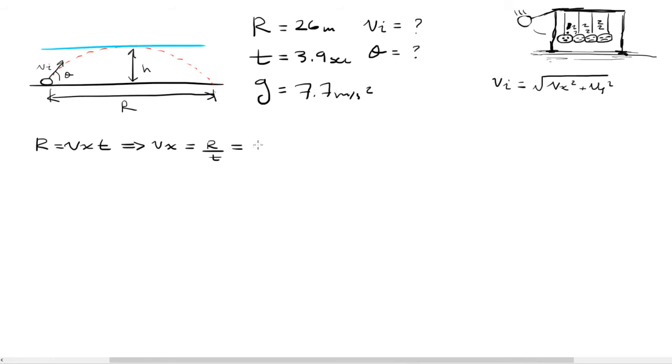And then we plug in what we know and solve for what we don't know. So the range is 26 meters, and the time is 3.9 seconds. So the velocity in the x is going to be equal to, if I grab my calculator here, 6.7 meters per second. And let's go ahead and box up our answer for now. We're halfway there for the initial velocity.